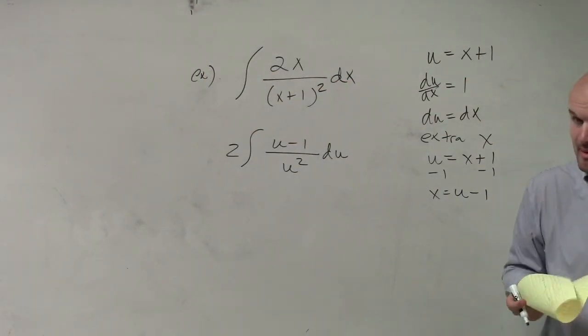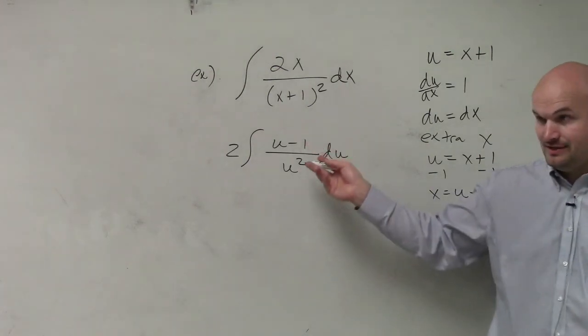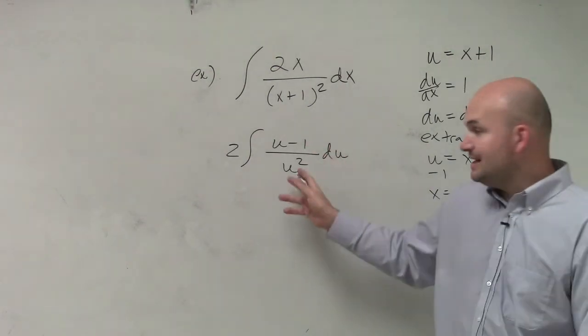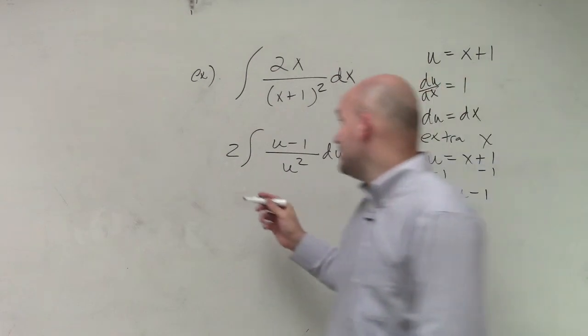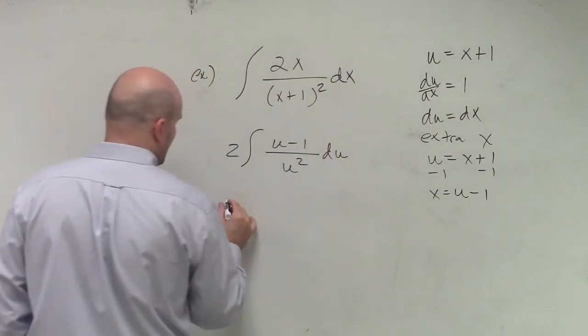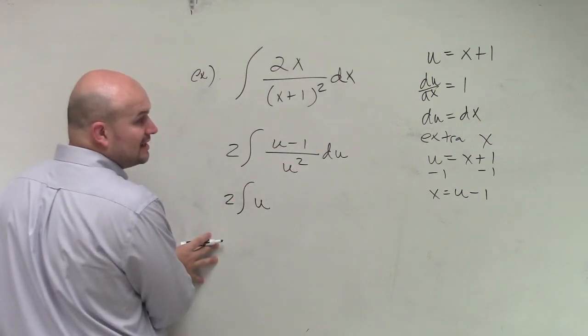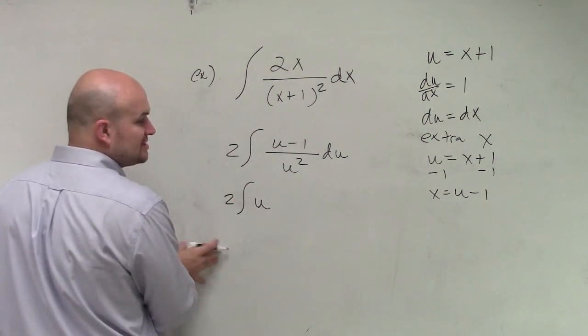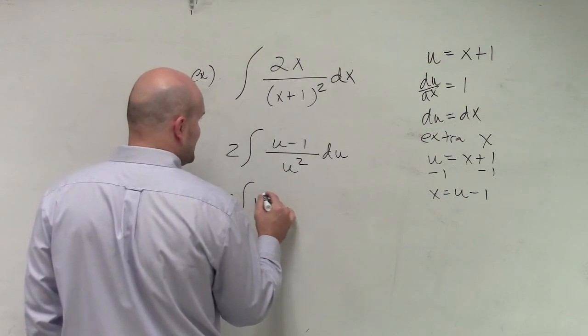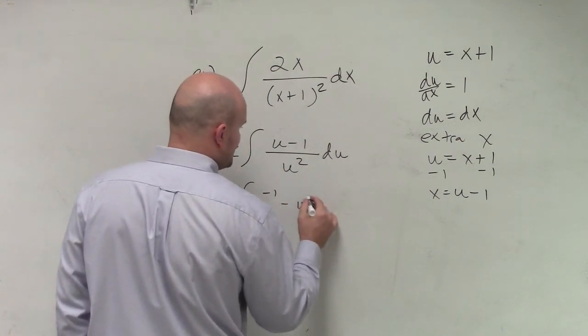Now, again, remember our goal is to integrate. We still can't integrate anything like this. However, we can divide the u squared into my numerator and my denominator. And therefore, I'll have something like this, u to the, remember when you're dividing exponents, you'd subtract the powers. So that's going to be a negative 1 minus u to the negative 2nd.